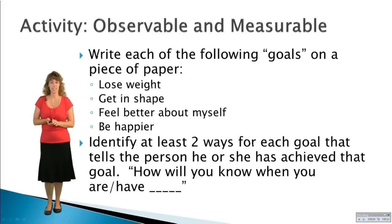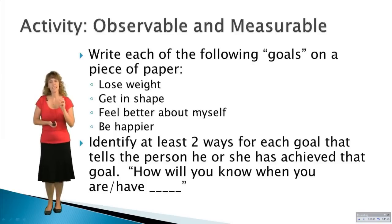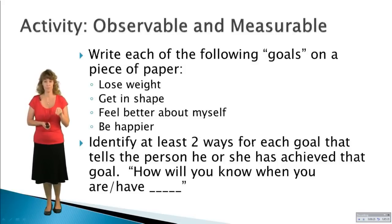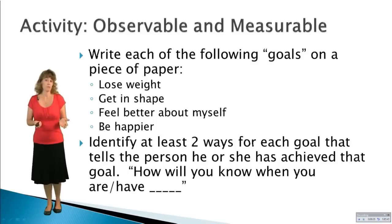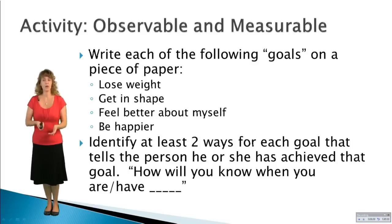One activity you can do to practice this is write down these common goals: lose weight, get in shape, feel better about myself, be happier. For each goal, identify two ways the person might know they're achieving it. Lose weight: their pants may fit a little better, or they may go down to a certain number of pounds. Get in shape: maybe they'll be able to run a mile in 12 minutes instead of walking it in 20. Start with the phrase: 'How will you know when you have achieved or are feeling blank?'